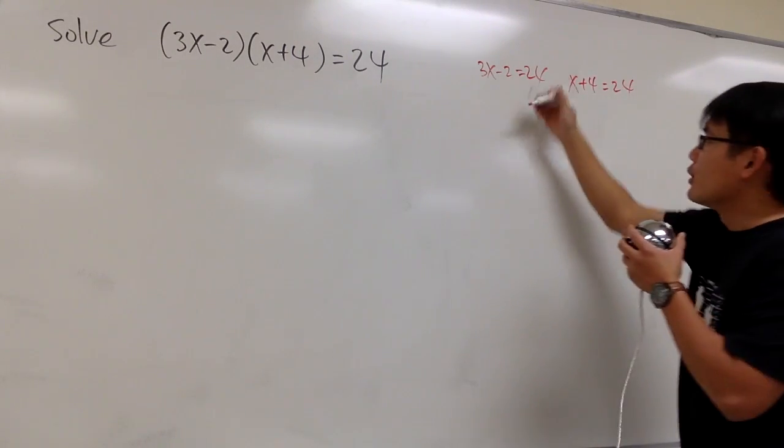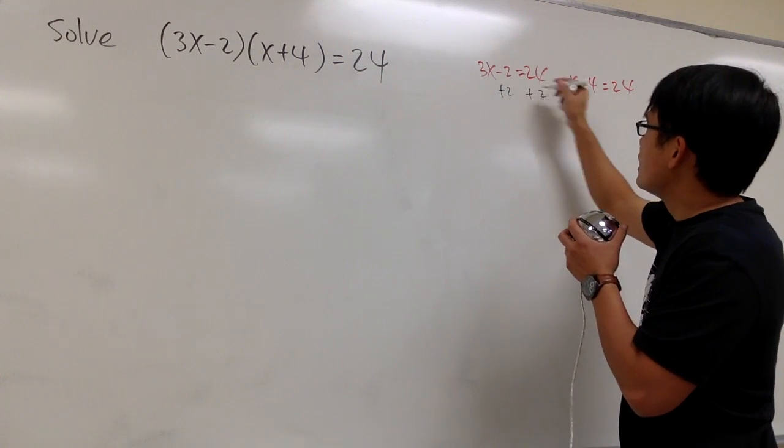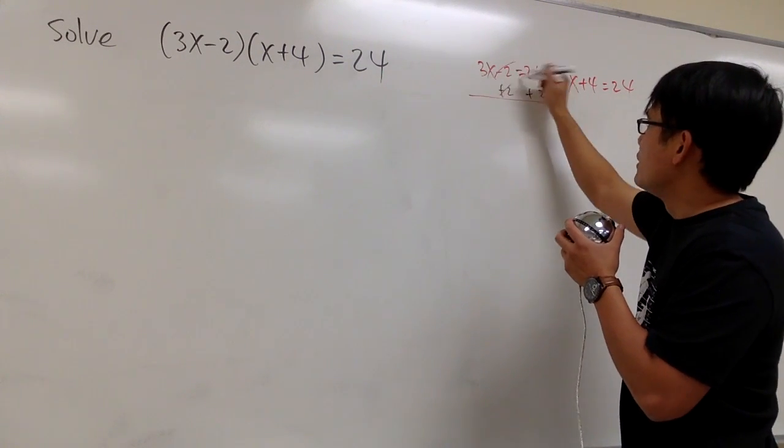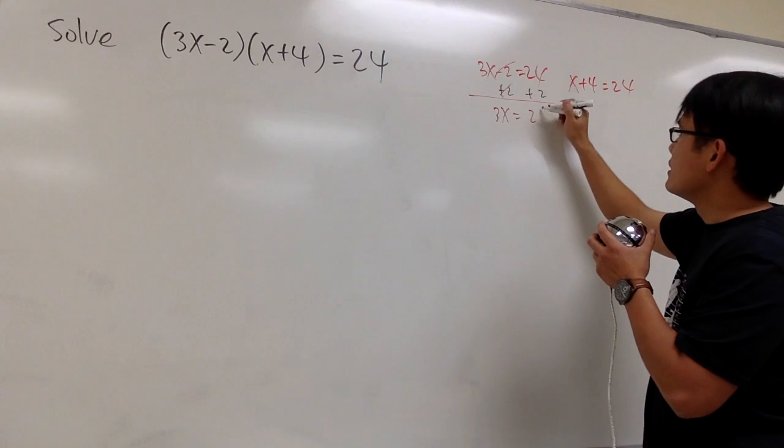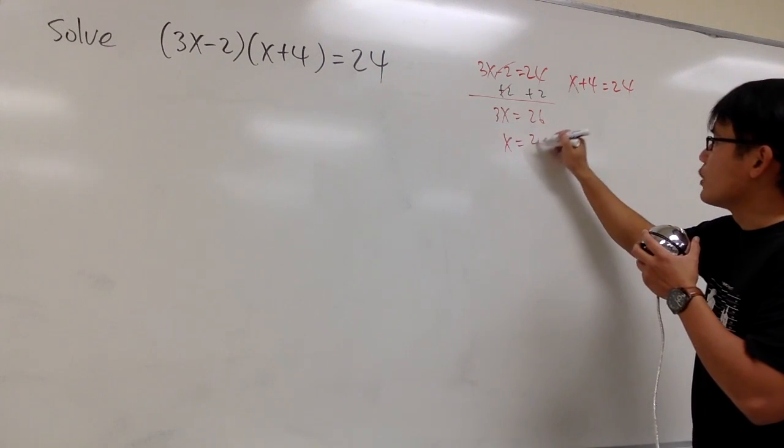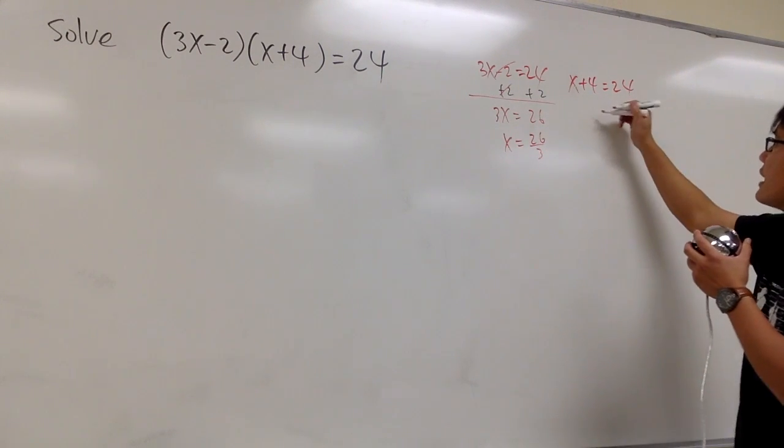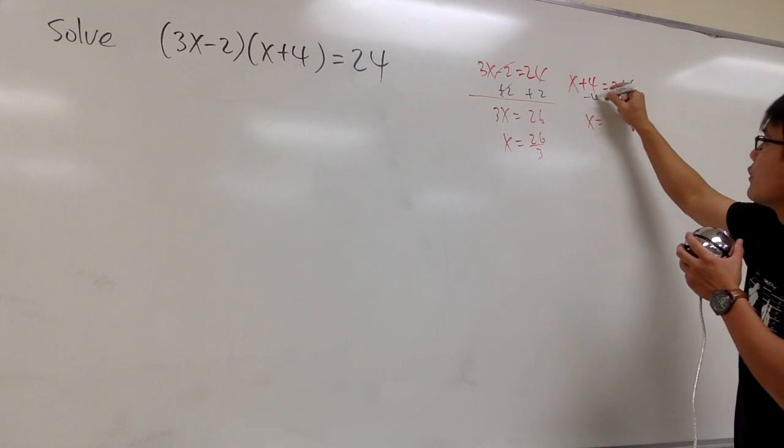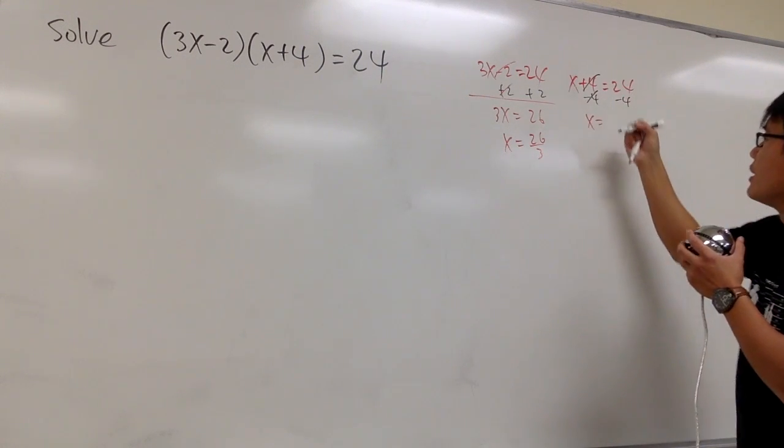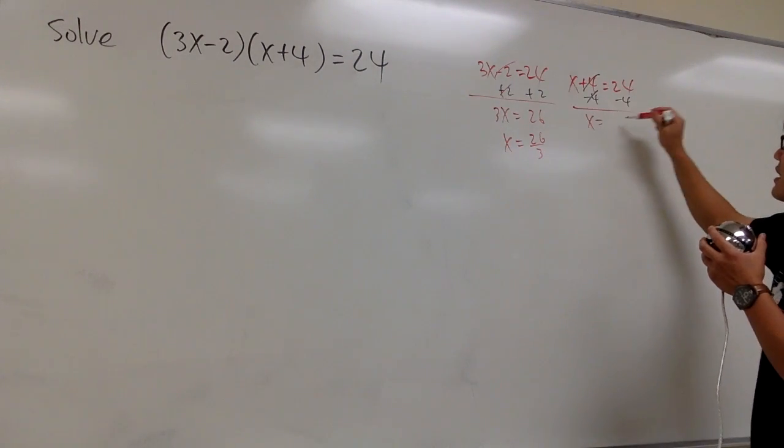And then you continue from there. You just go ahead and add 2 on both sides, and then you get 3x equals 26, and you get x is equal to 26 over 3. And after you subtract 4 on both sides, you get x is equal to 20.